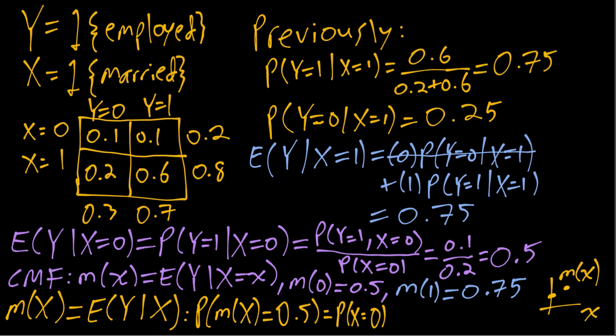For that, we can again go back to our table from previous videos and see the marginal probability that X equals zero is 0.2. Similarly, the probability that m of X equals 0.75 is the same as the probability that X equals one, which from our table before we computed as 0.8.